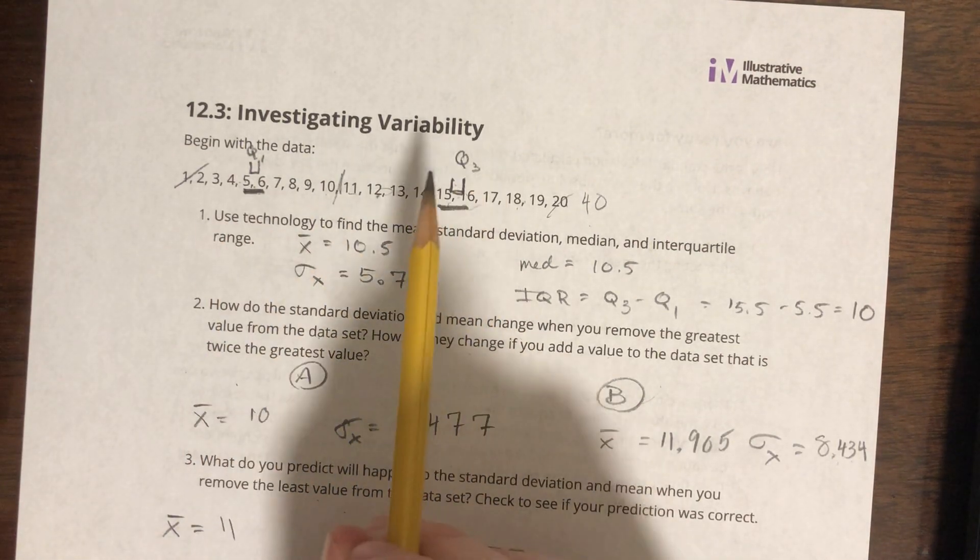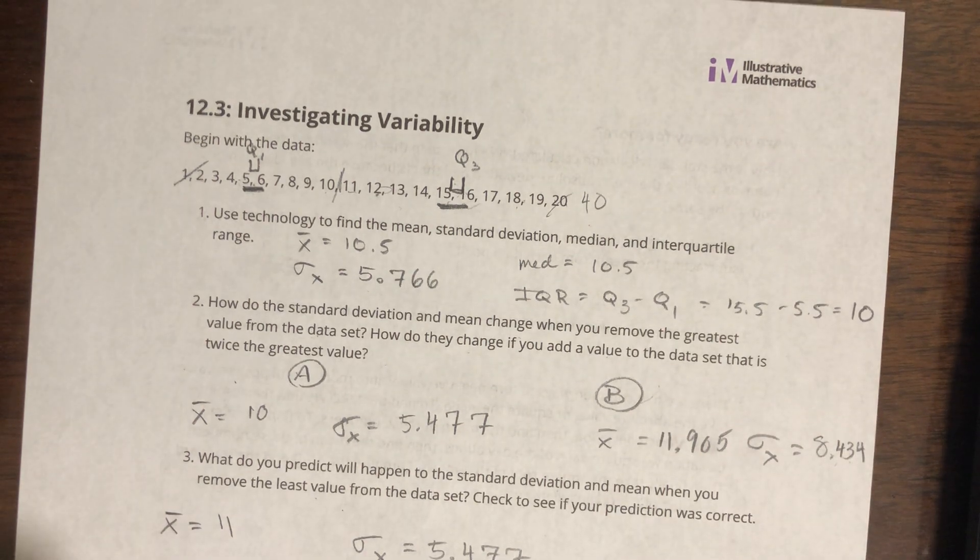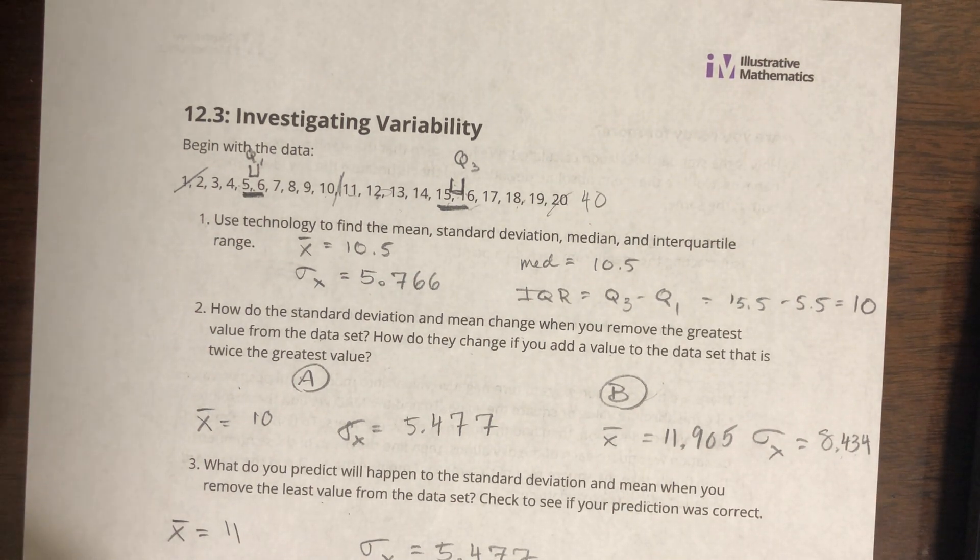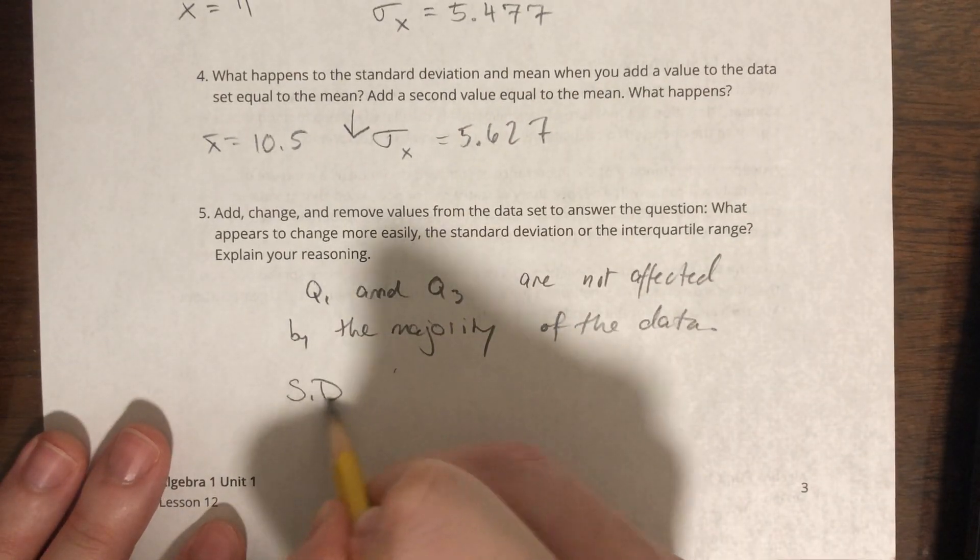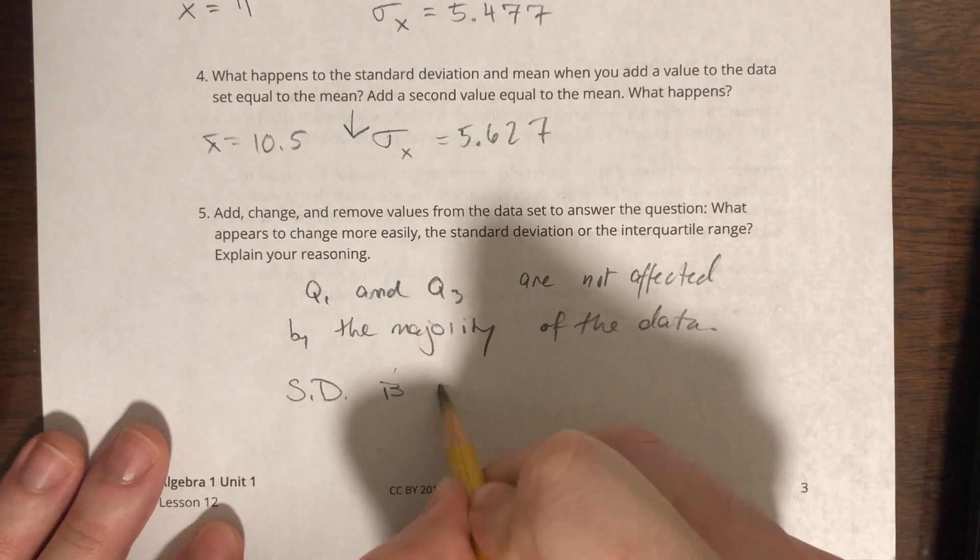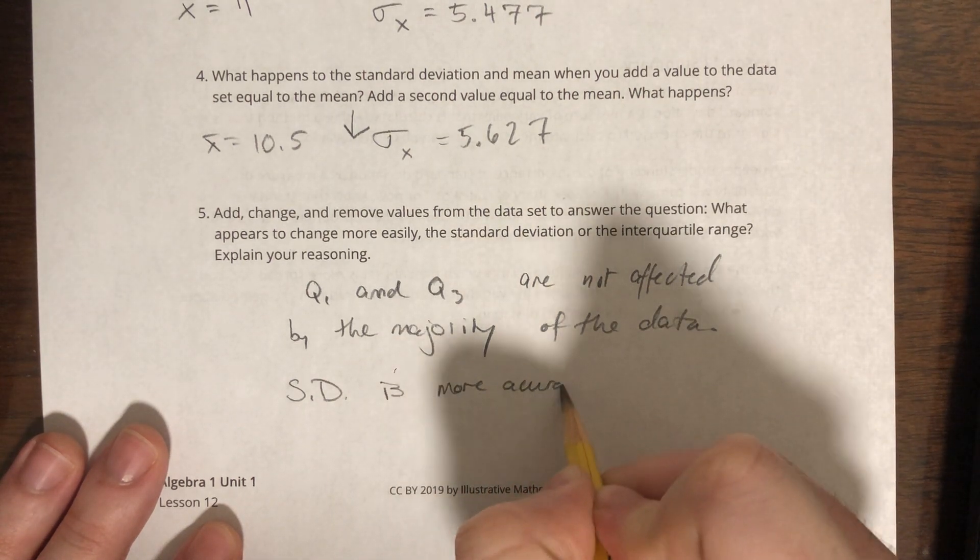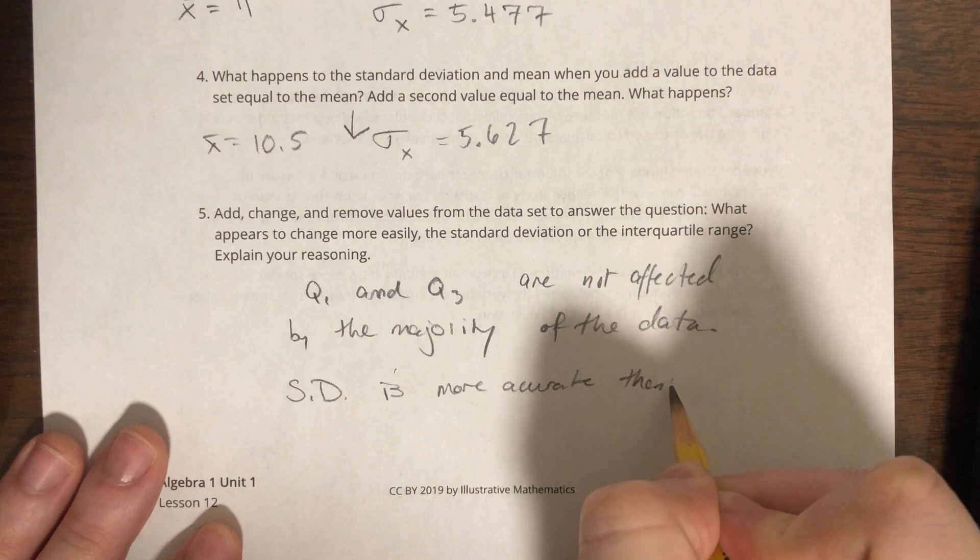So Q1 and Q3, while they are helpful, IQR is definitely a good measure of variability in some cases, it is nowhere near as accurate as standard deviation. So we can write that, I'll abbreviate it: standard deviation is more accurate than IQR. And that is all for 12.3.